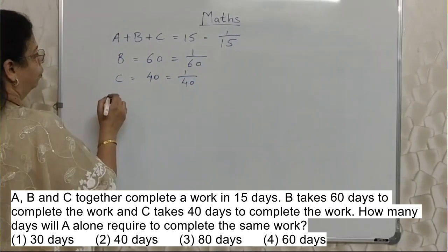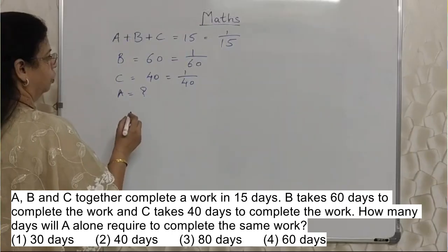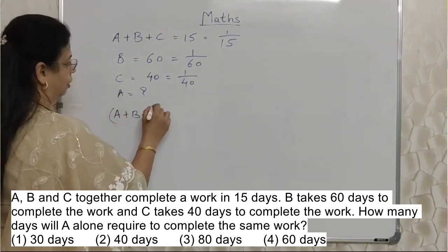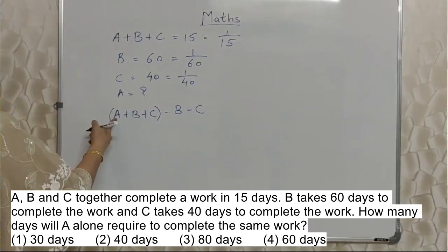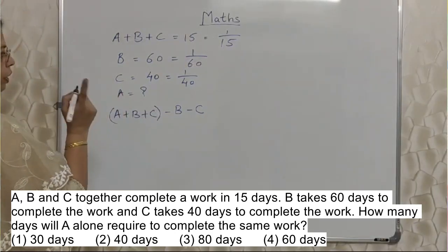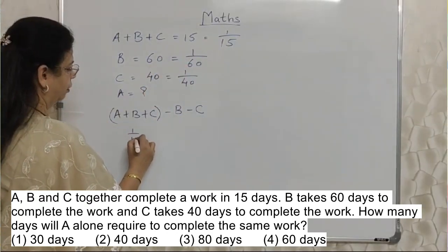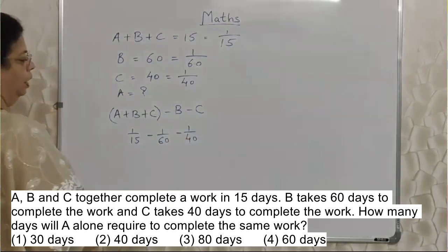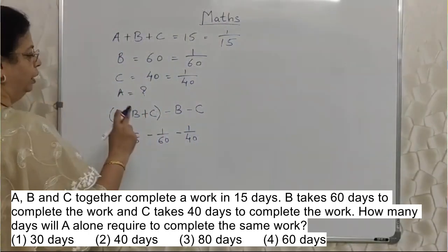Now we need to find out how many days A alone will take. So A plus B plus C minus B minus C — what will remain? Only A. That is what they have asked. So A's one day work equals 1 upon 15, minus 1 upon 60, minus 1 upon 40. As the denominators are different, if we want to proceed with subtraction, we need to find the LCM.